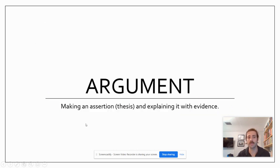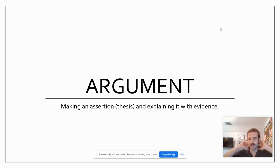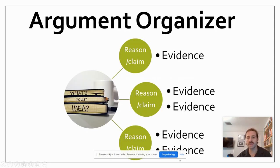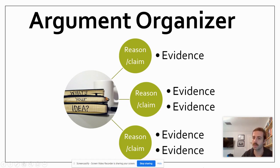Today we're going to specifically look at claims. An argument is not just two people disagreeing — it's not just you having an argument with your parents about cleaning your room. An argument is the ability to make an assertion or a thesis and then back that idea up by explaining it with evidence and support. This is a very common graphic organizer for what arguments look like if we were to put them visually into a diagram.